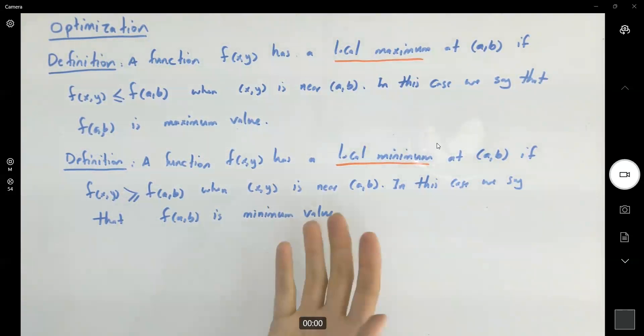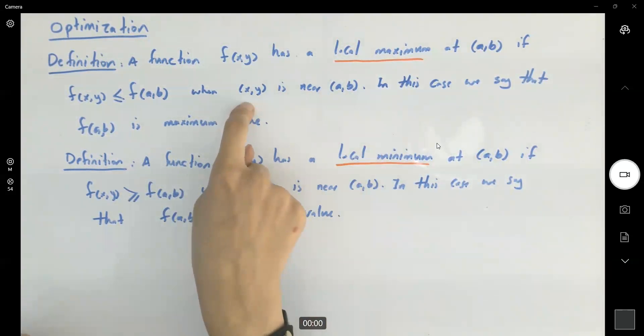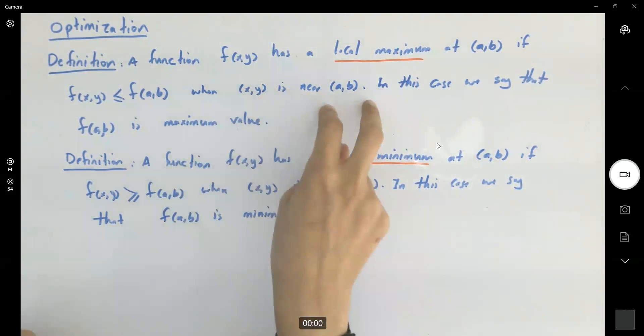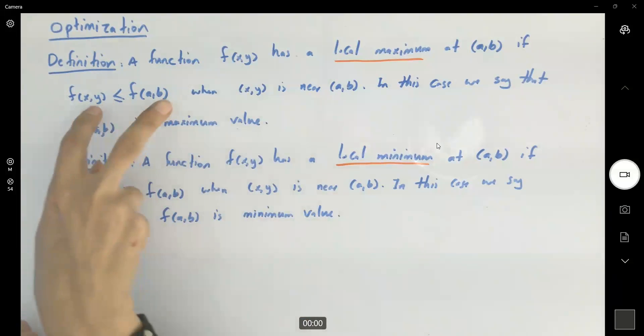When do we say we have absolute minimum, absolute maximum? If these points are all over the domain. So it doesn't have to be exactly near a and b. For any set of points in the domain, if you have this inequality you're going to have an absolute maximum, absolute minimum.